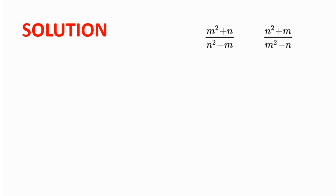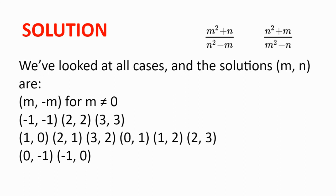We have now looked at all the cases. Collecting all solutions: from m = -n (n ≠ 0), all pairs (m, -m); from m = n: (-1, -1), (2, 2), (3, 3); and from the main case and its flipped counterparts: (1, 0), (2, 1), (3, 2), (0, 1), (1, 2), (2, 3), (0, -1), and (-1, 0).